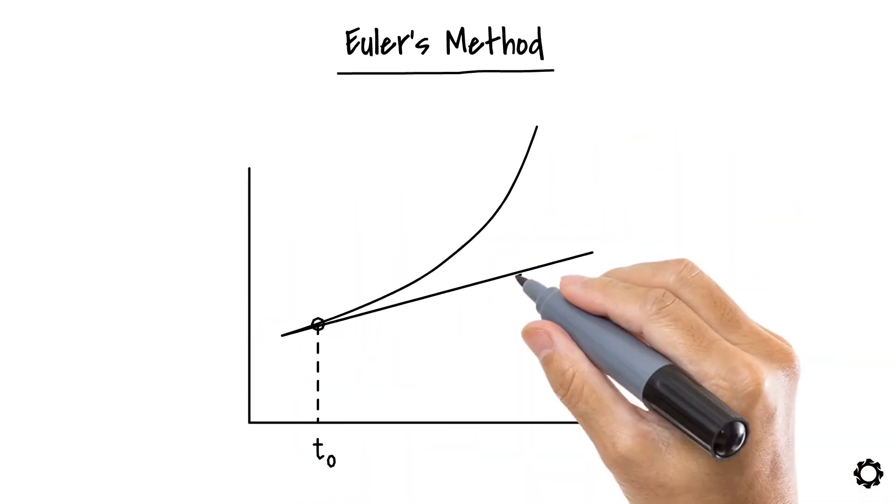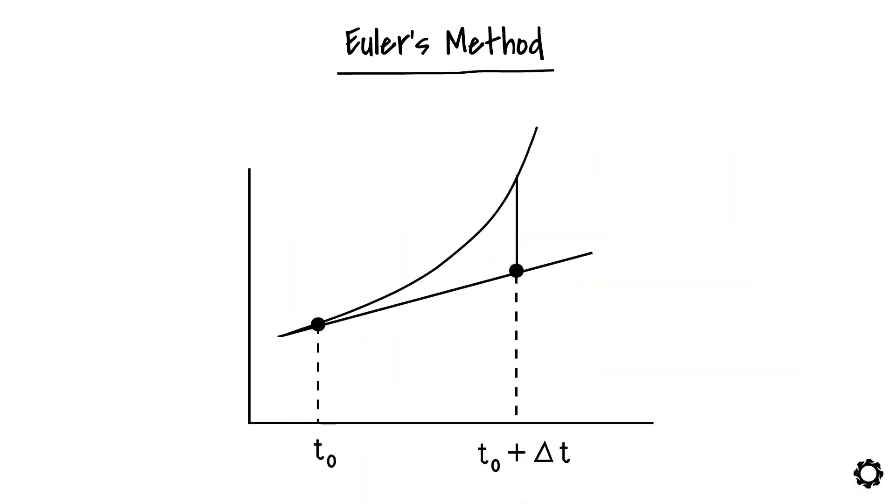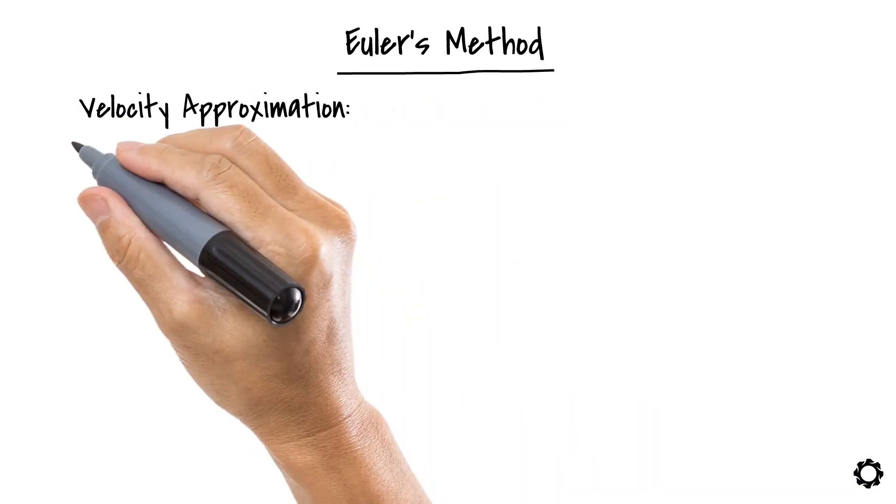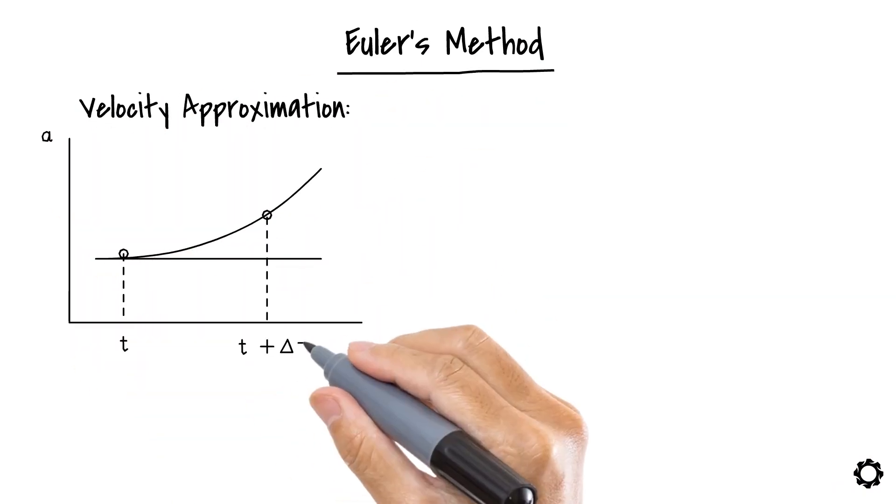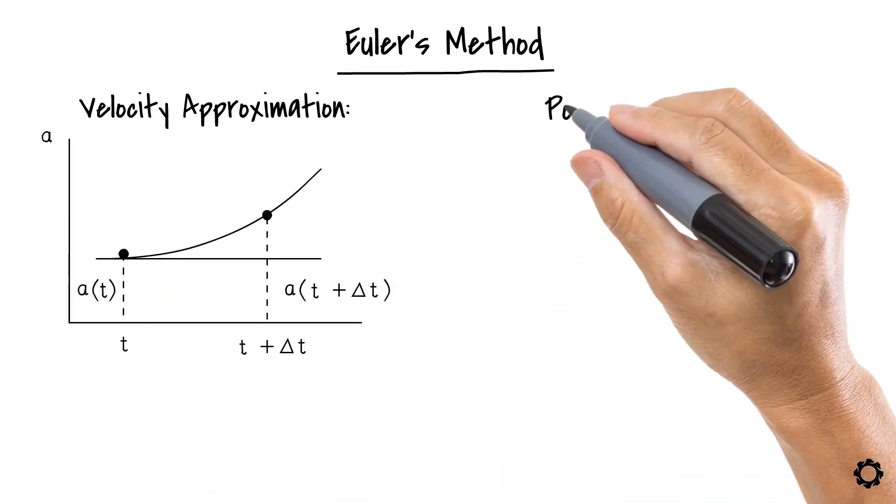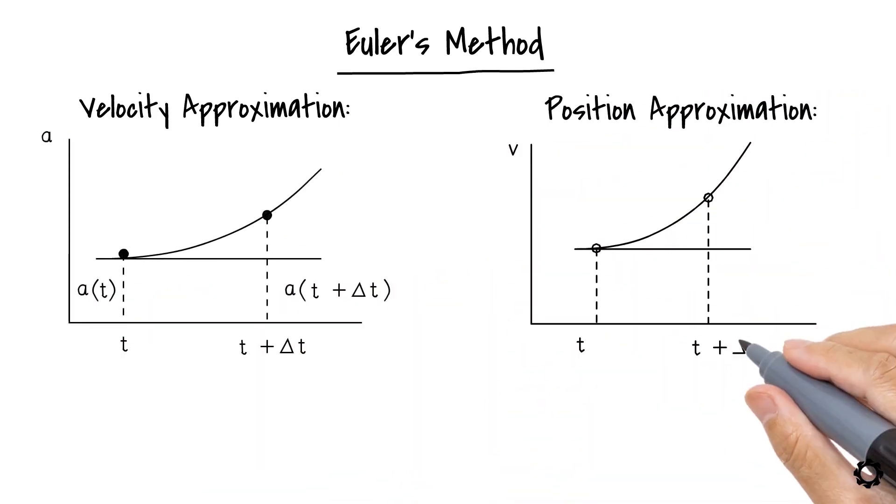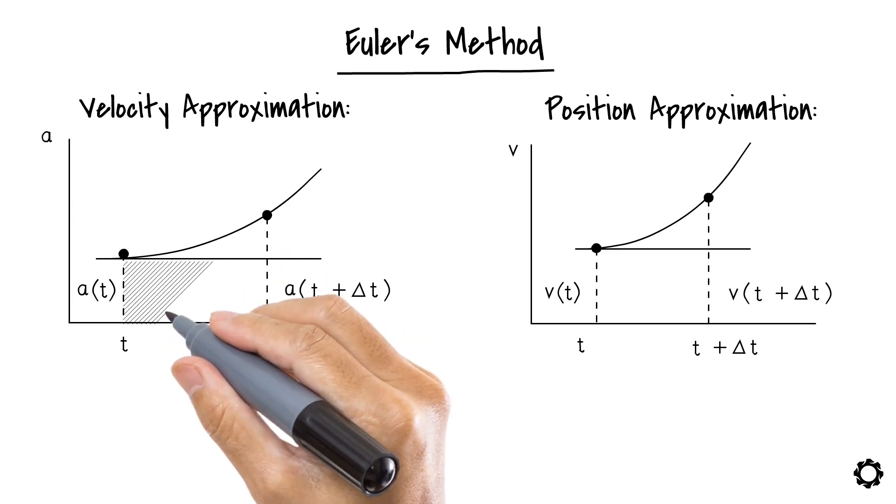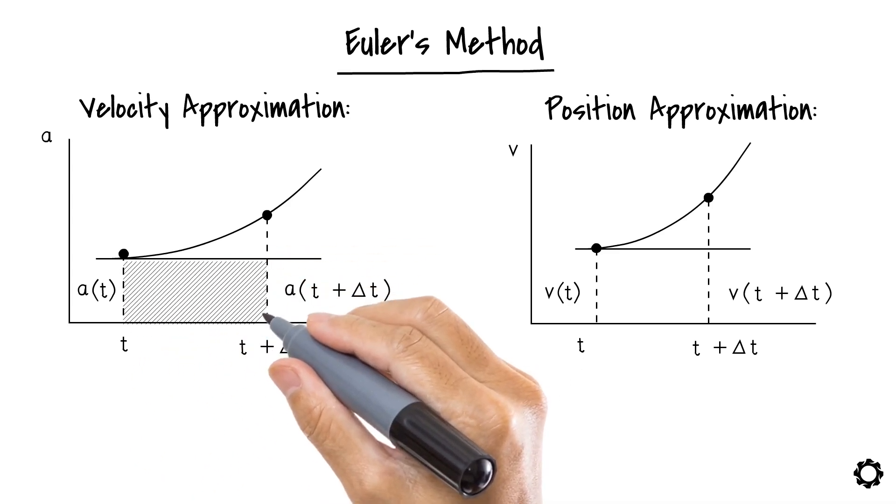In Euler's method, we approximate the velocity and position responses by fitting small tangent lines over short time distances to the response curve. In velocity approximation, this fitting is done to the acceleration's response curve, whereas in position approximation, this is done to the obtained velocity response curve. By doing this, we can determine the corresponding integral values for the velocity and position by measuring the rectangular area that is under the curve of that function.